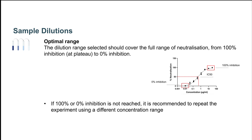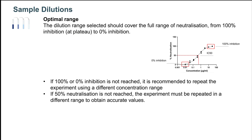It is important that both samples and controls are diluted in the correct way in order to cover the full range of neutralization, from complete inhibition at 100% to no inhibition at 0%. It is especially important that 50% neutralization is reached. If this is not the case, sometimes the software will still provide an IC50 value, but such value will only be an estimate and will not be accurate. Therefore, the assay should be repeated in a more suitable range.